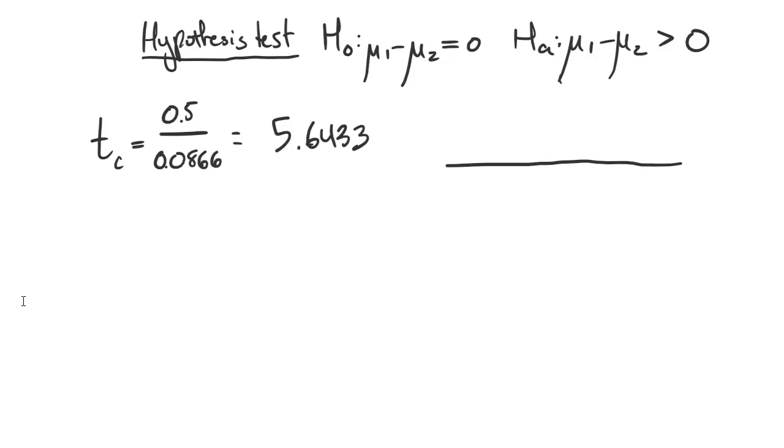We have this distribution of differences of sample means supposedly centered at 0 if the null hypothesis is true. Our test statistic is all the way out here at 5.6433. Since the alternative hypothesis is that the true difference in the means is greater than 0, our more extreme situation is going to be this pink shaded area here.